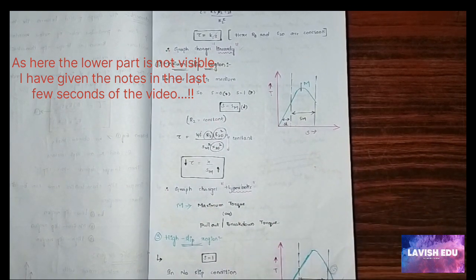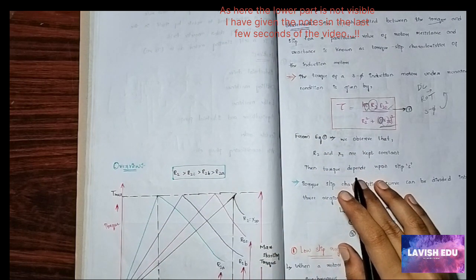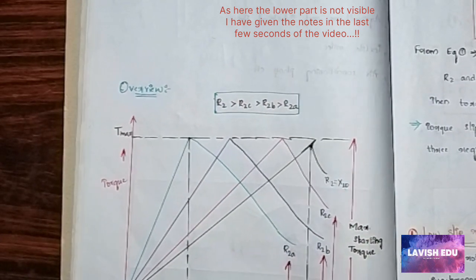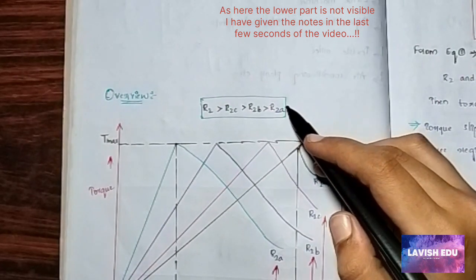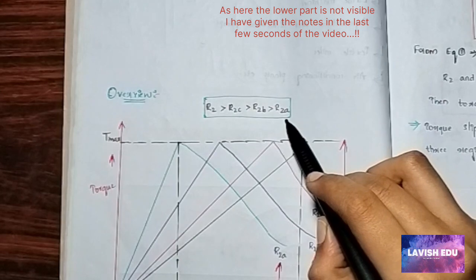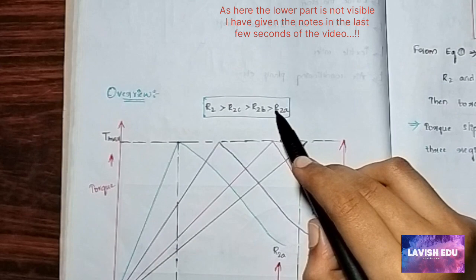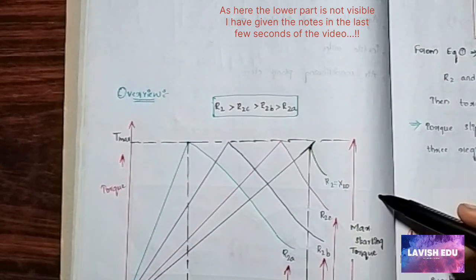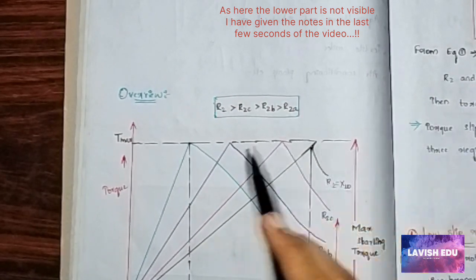Now we will see the overview of this significance of the torque-slip characteristics. Here this is s equals to zero, s equals to m, and s equals to one. Here the three resistors are propagated which is R2, R2c, R2b, R2a, which is in descending order. Here we have got the maximum torque and this is the maximum starting torque.